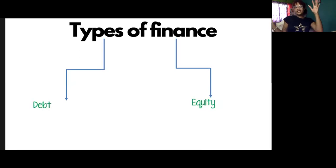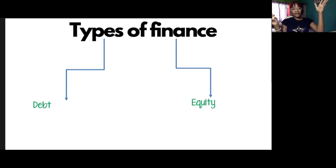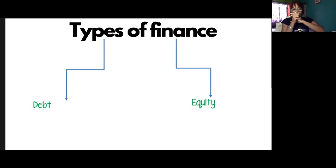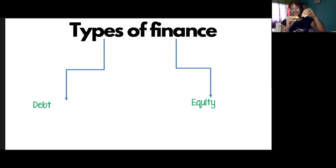So we have two types of financing. Take a moment to draw up this little diagram. The two types of financing would be debt and equity, and we have things to go beneath them as well.